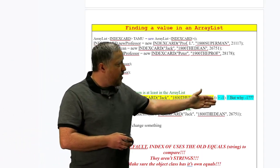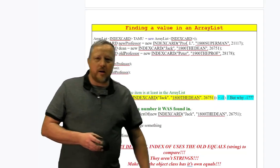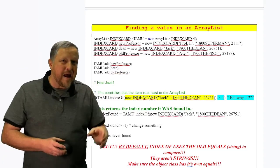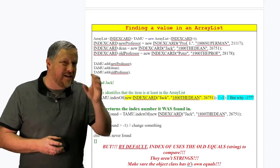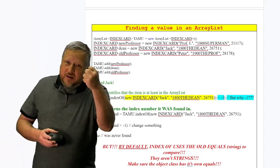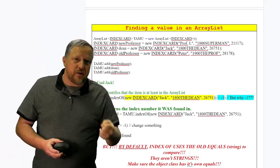And remember, by the way, the greater than negative one, it's got to be greater than negative one because think about it. If you have an object that matches that is at index zero, this if statement will return zero because it's the first one. Zero is a legit value.